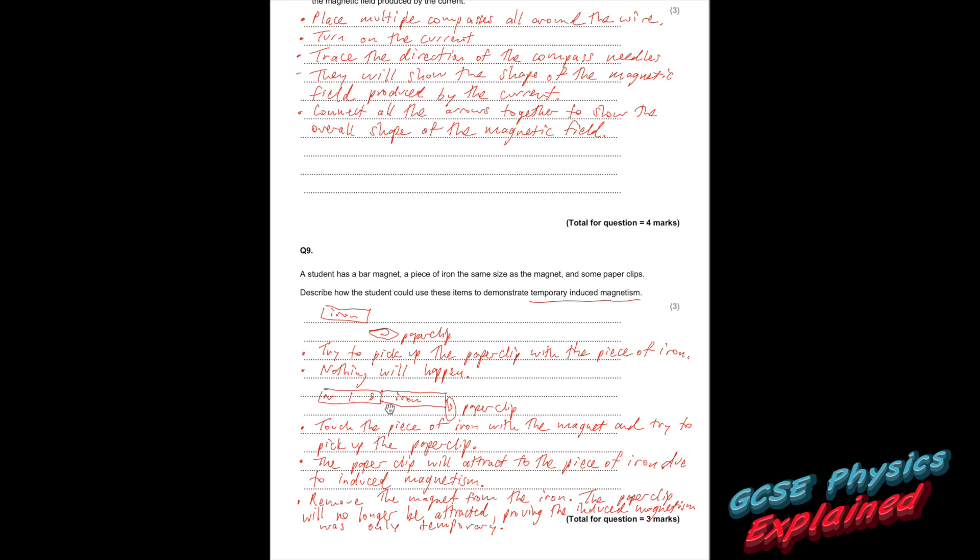Then you want to touch the piece of iron with the magnet. And try to pick up the paper clip. And what will happen is the paper clip will attract to the piece of iron due to induced magnetism. Then what you want to do is take the magnet off the piece of iron.